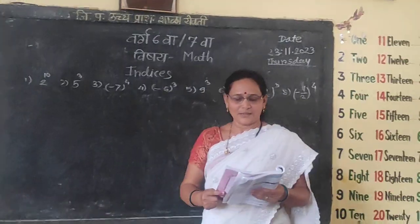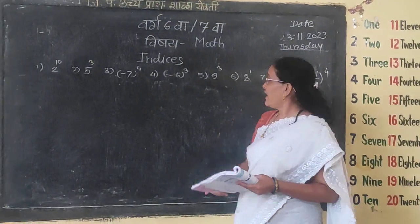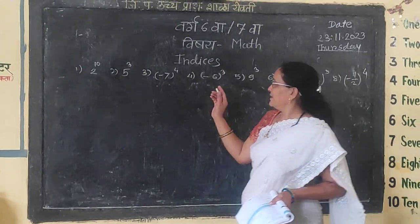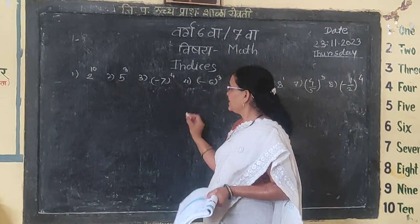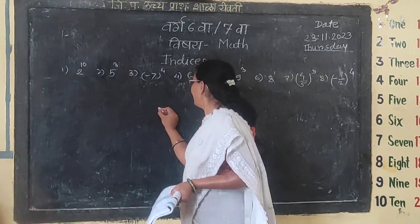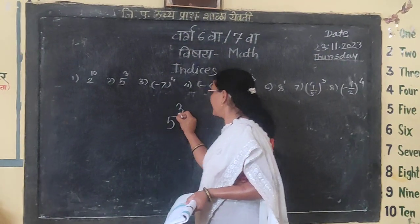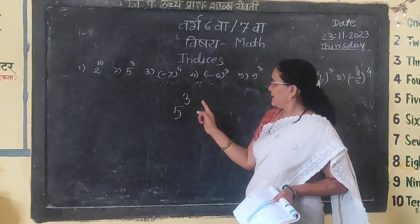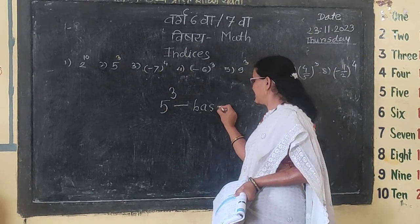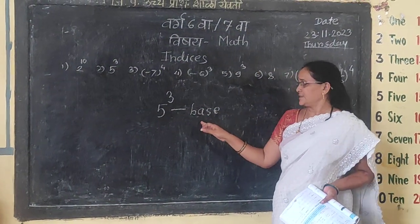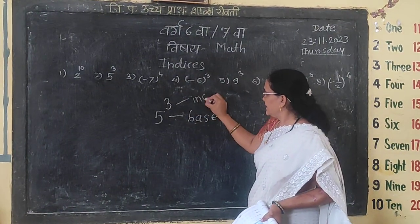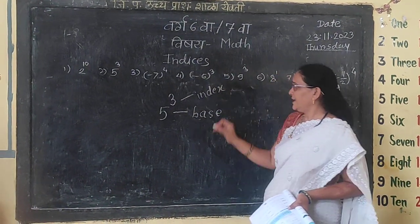Today we have to learn indices. Indices means, for example, 5 raised to the power 3 — in that, 5 is a base and 3 is the index.